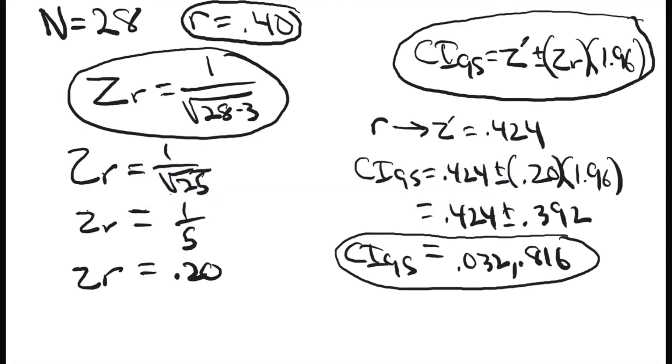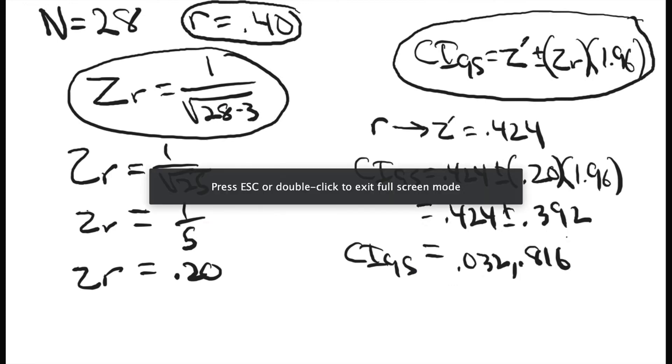Now the last step is to remember that these values here are calculated with transformed correlation coefficients. We have to transform those back into regular r correlation coefficients to find out what the actual confidence interval is. We can go back to that applet and plug in the values.